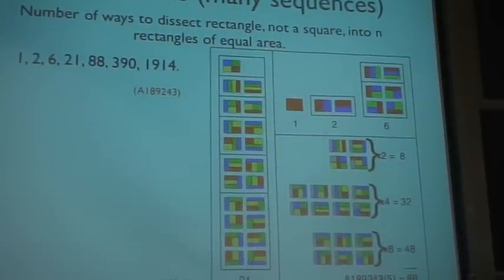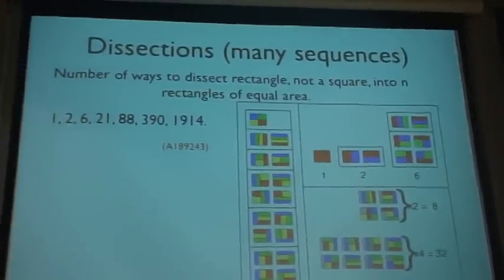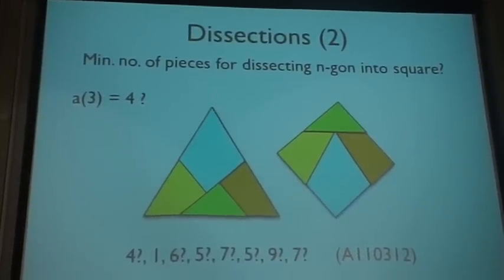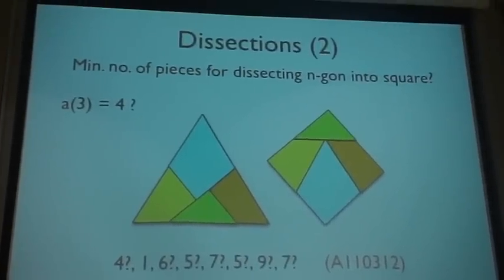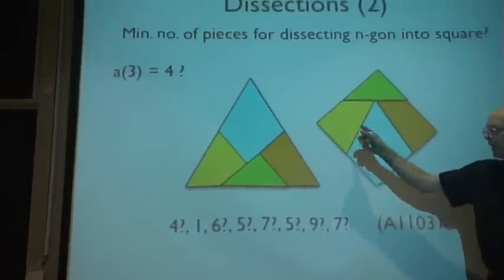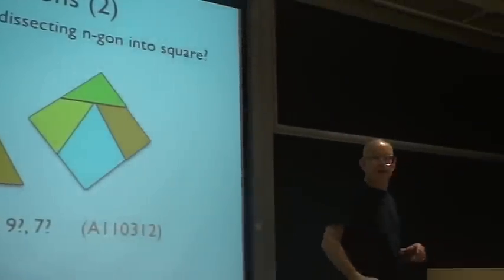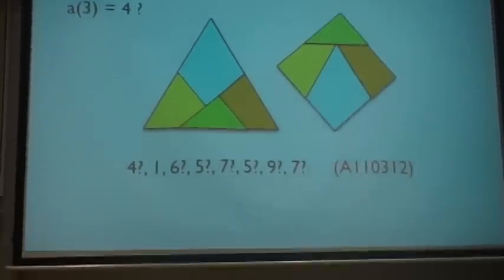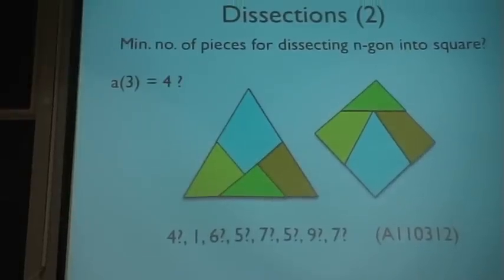Dissections. I don't think I have time to talk about these dissections. A number of ways to dissect a rectangle, not a square, into rectangles of equal area. One of my favorite unsolved questions is, What's the smallest number of pieces that you can cut up a triangle into to make a square? Using scissor cuts, rectifiable cuts. You can cut up a triangle into four pieces that can be rearranged to make a square. It's an open question, I believe, to show that you can't do it with three pieces. So, four seems... The minimum number of pieces for dissecting an n-gon into a square. We know just one term. One. For any others, nothing is known. This seems to be shocking.